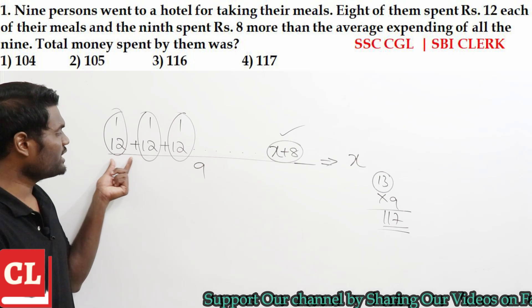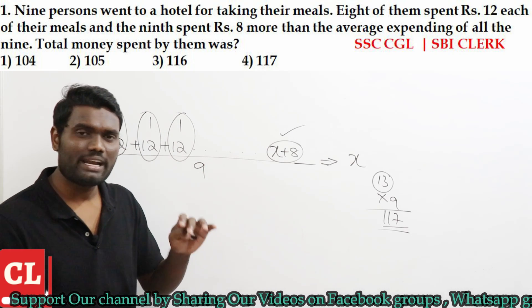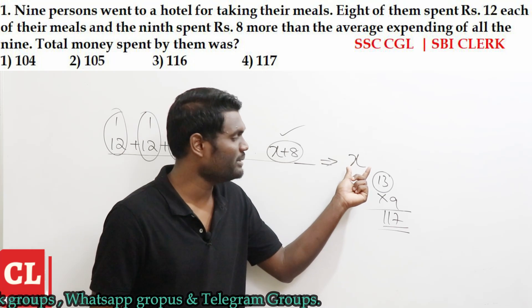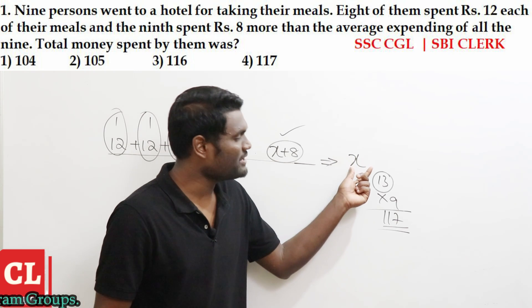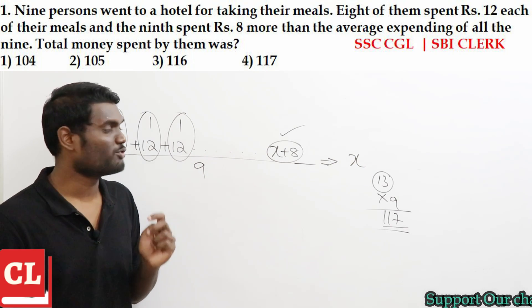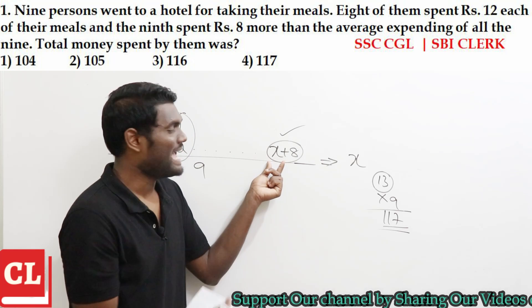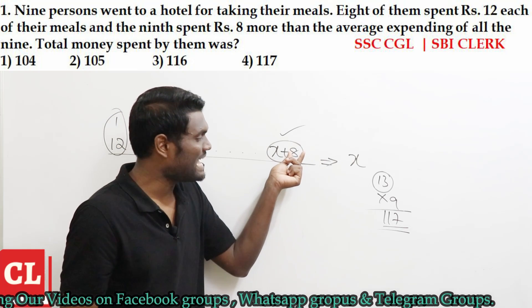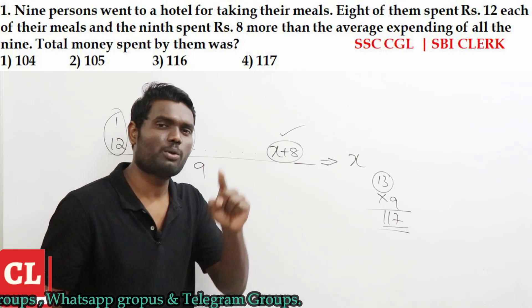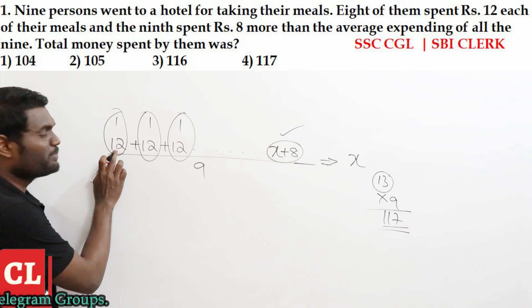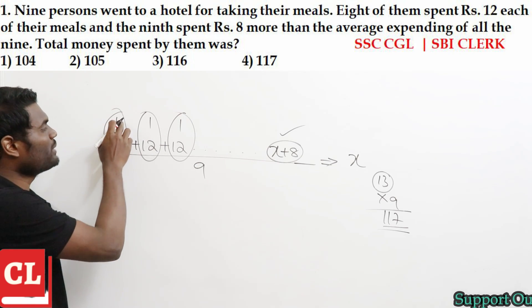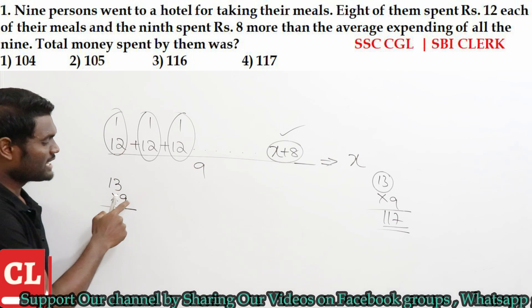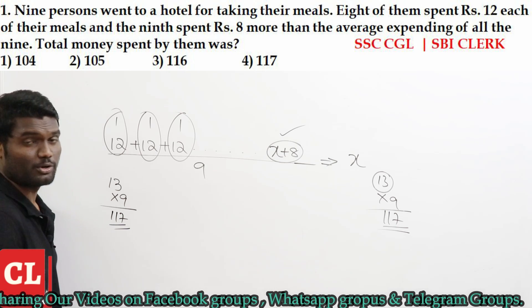So the simple thing is: 8 persons spent ₹12 each. The 9th person spent 8 rupees more than the actual average. Assuming average is X, the 9th person spends X plus 8. Distributing that extra 8 among the remaining 8 persons gives 1 rupee each, making everyone's share 13. So average is 13. Total expenditure is 13 × 9 = 117 rupees.